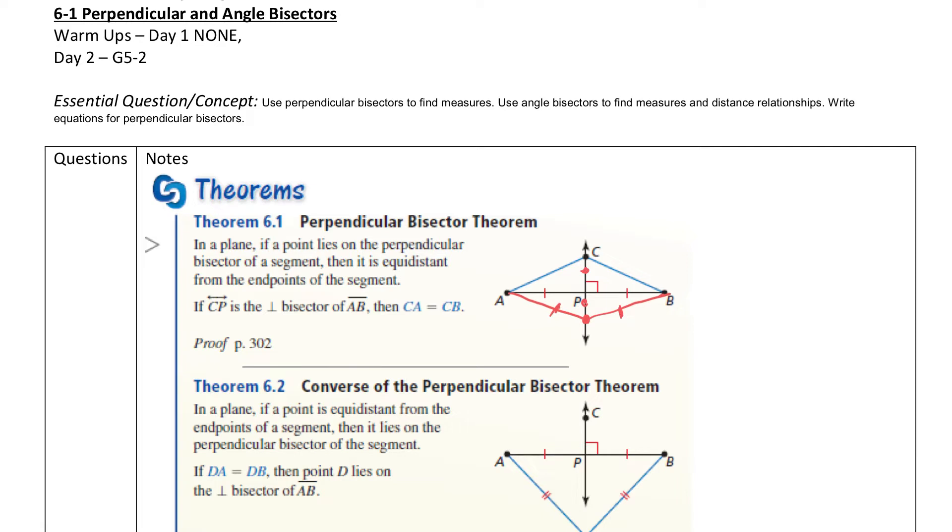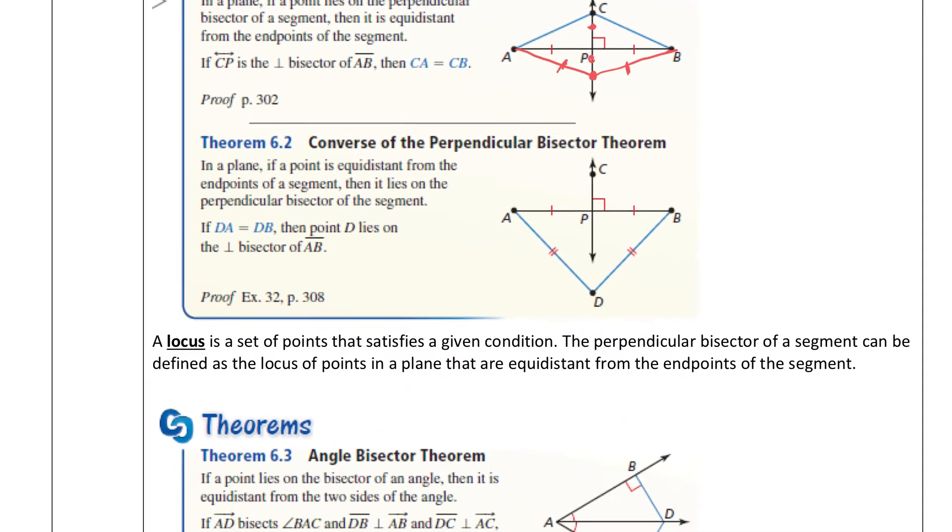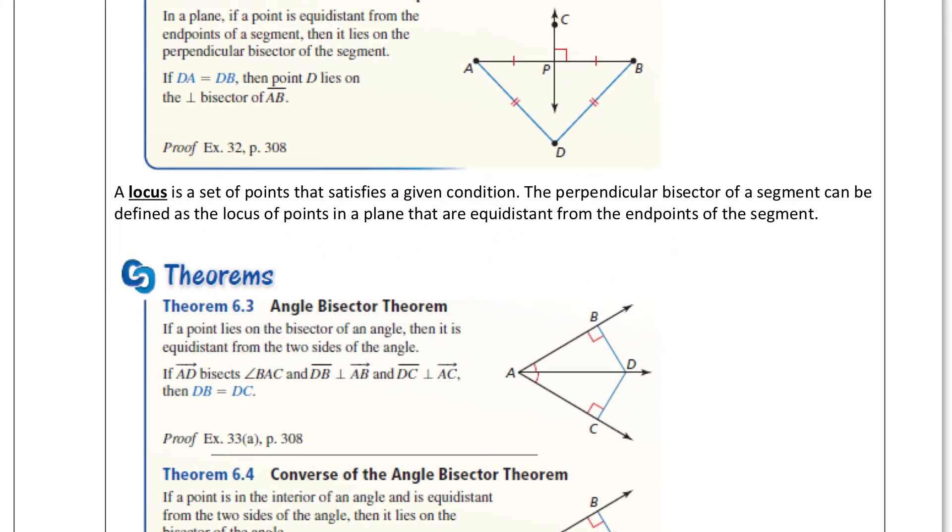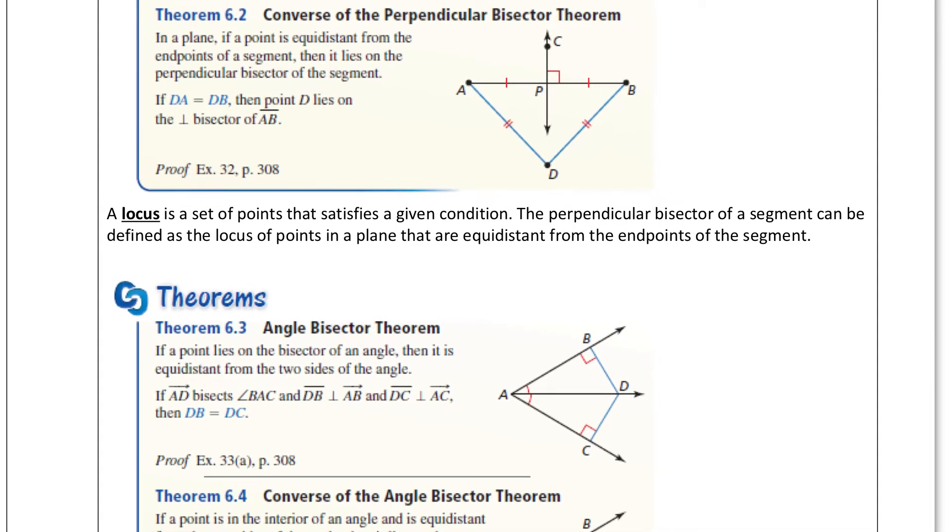The converse is just the opposite. Now what we're saying is, if I have a point that's equidistant from A and B, so if that's the same distance, then this has got to be on the perpendicular bisector. Two easy, quick theorems here, which is something that you should kind of just know by intuition after doing a bunch of problems.